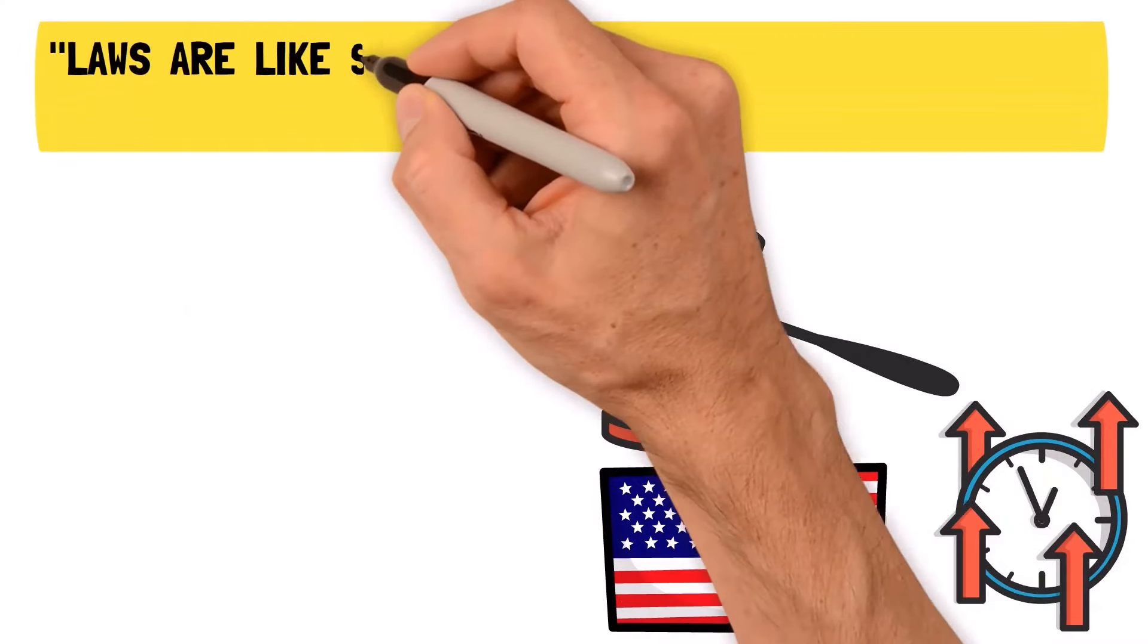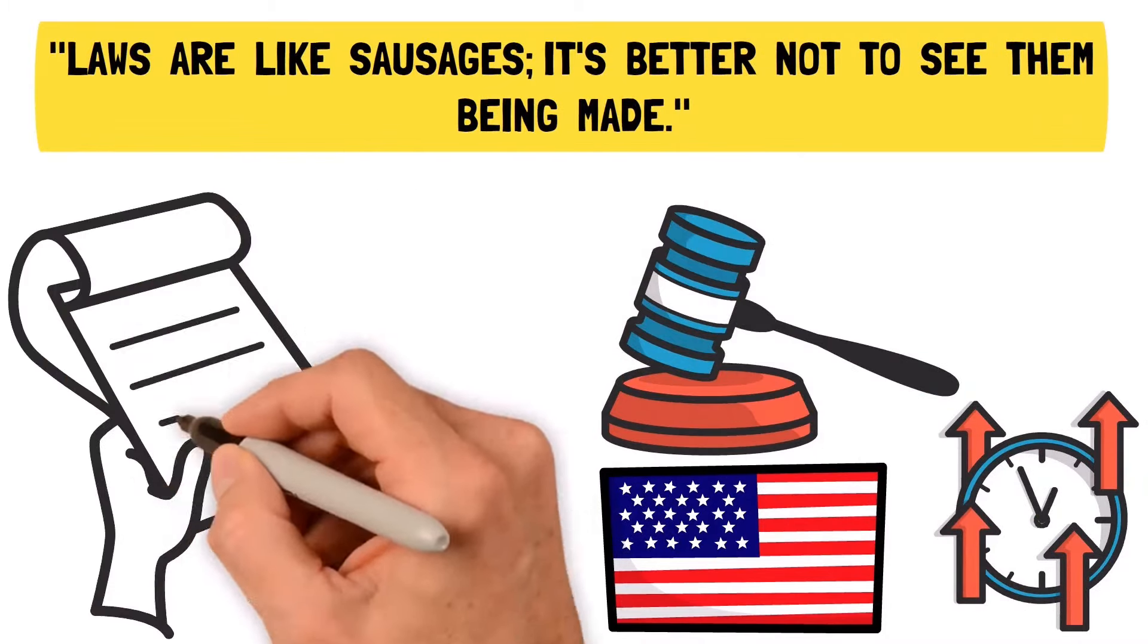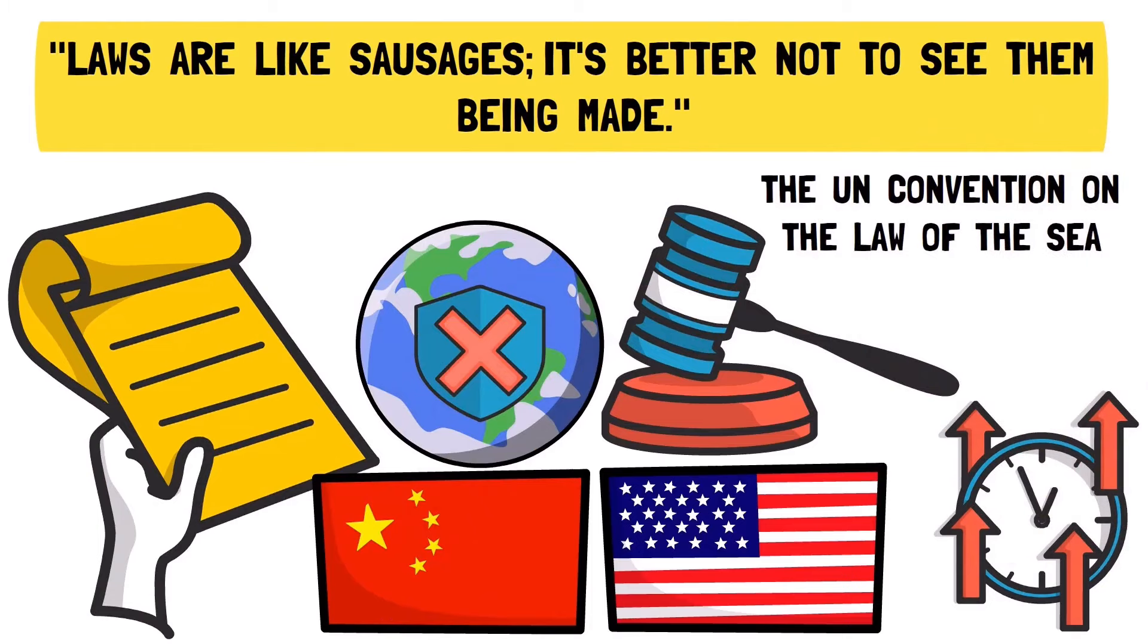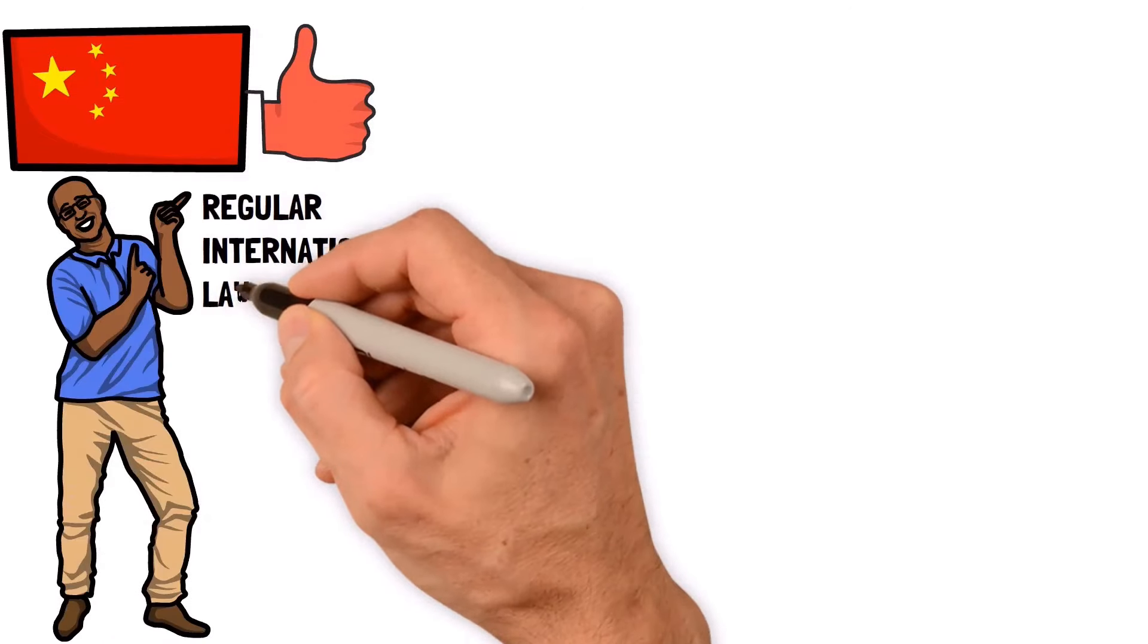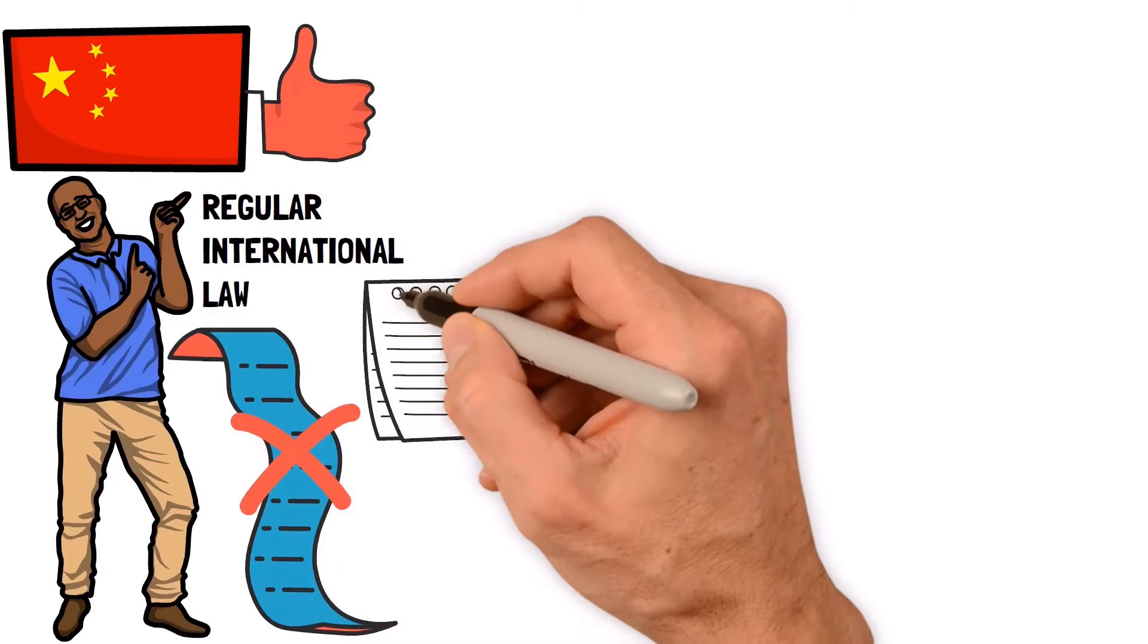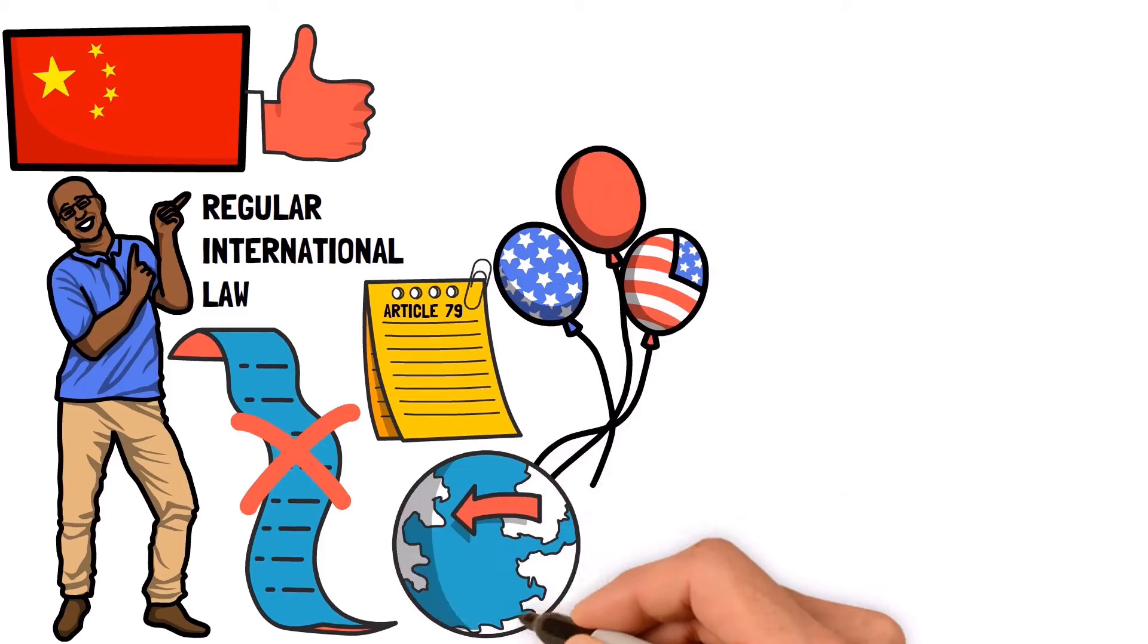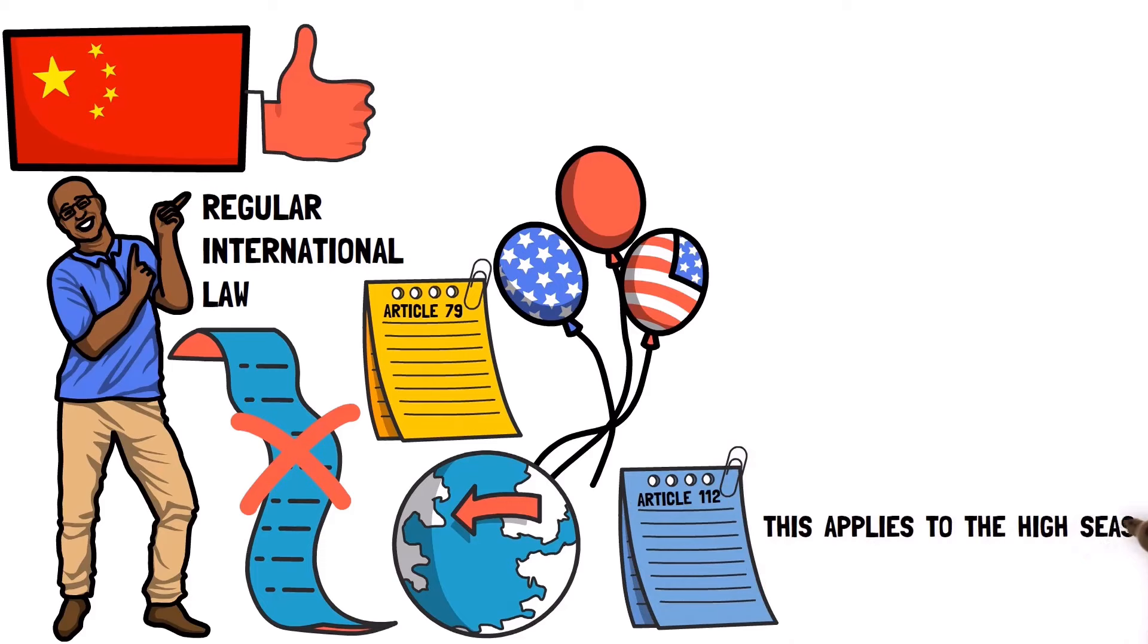There's a saying: laws are like sausages, it's better not to see them being made. By making strict rules for getting permission, both China and the US are not following a big international rule called the UN Convention on the Law of the Sea. China agreed to follow this convention and the US treats it like it's just a regular international law, but the rules they're making don't follow what the Law of the Sea says. For example, Article 79 of the Law of the Sea clearly says that every country can put cables on the ocean floor of the continental shelf. Article 112 goes even further and says that this applies to the high seas beyond the continental shelf.